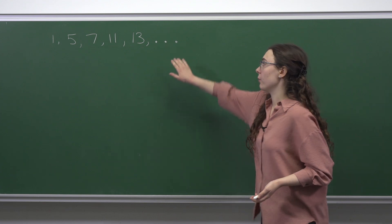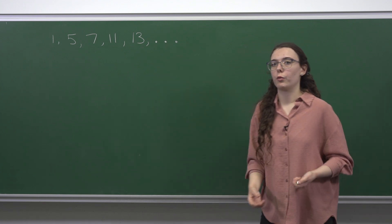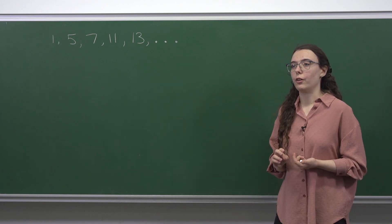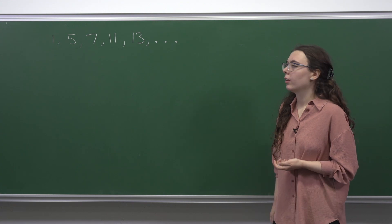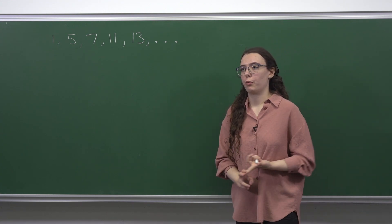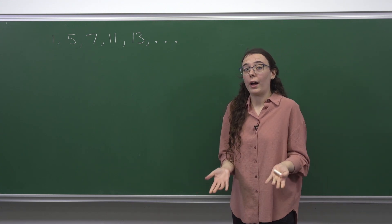We're asked to find the 100th term of this sequence which consists of all numbers which are odd and not multiples of three. So if you're odd and not a multiple of three, then what can your remainder be on division by six?